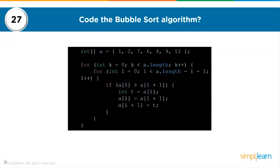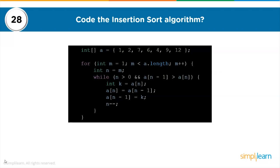The 27th question: code the bubble sort algorithm. Declare an array, nest a couple of loops, compare the numbers in the array, and sort it in ascending order by replacing elements found in the wrong order. The 28th question: code the insertion sort algorithm. The first element is assumed sorted; take the second element and store it separately as a key. Compare each subsequent element with the elements to its left and continue the process until the array is fully sorted.